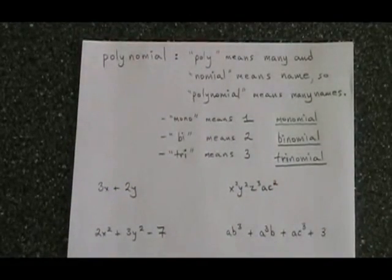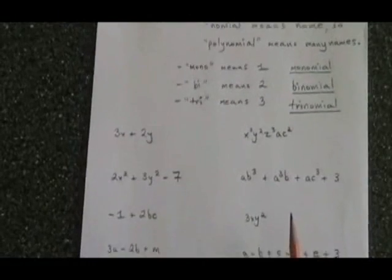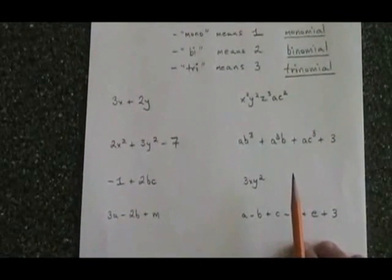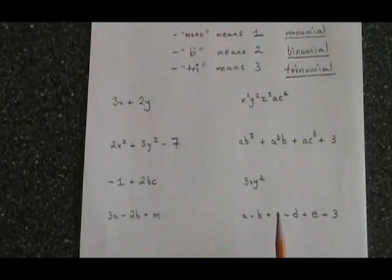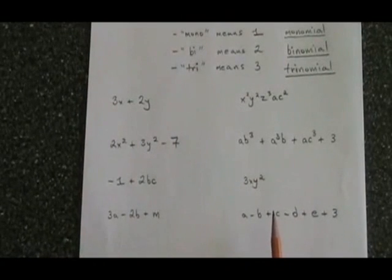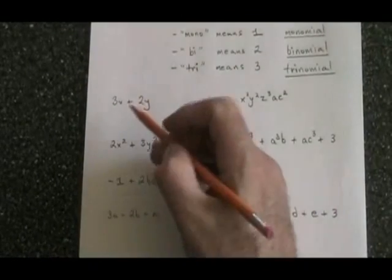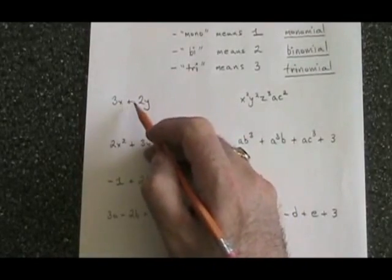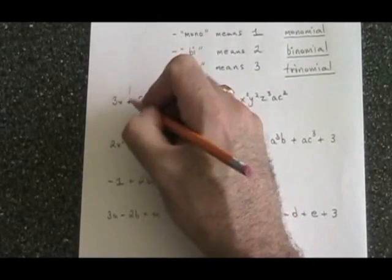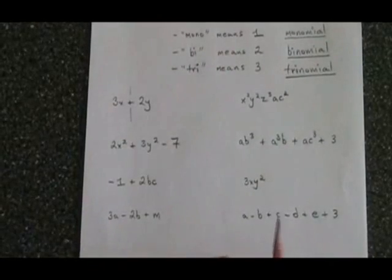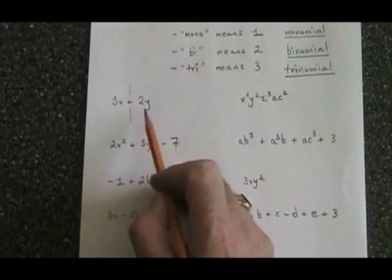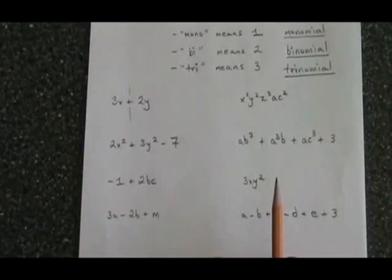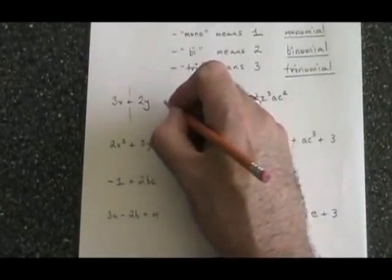Let's identify the names of these polynomial expressions. Three x plus two y. How do we know how many terms there are? Well, one trick is to see any plus sign or minus sign as a wall that divides the polynomial. The wall from our plus sign divides this polynomial into two terms. Two terms means it is a binomial.